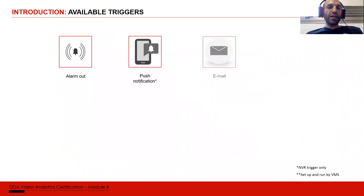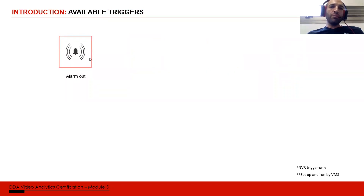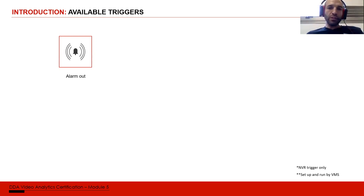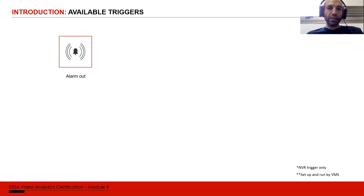The different types of triggers we have include alarm output. Alarm output is basically a relay — you can connect almost anything to it. With everything, I mean mostly things with low voltage, not AC 200 or 110 volt, but anything that requires low voltage: LED lights, strobe lights, sirens, gates to open or close, and so on. The name 'alarm out' stuck from the beginning of time, but it's actually a relay — and with this relay you can connect any low voltage system.